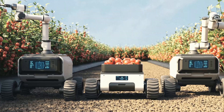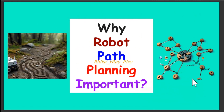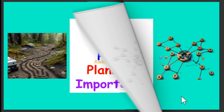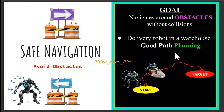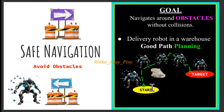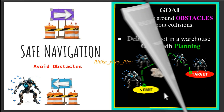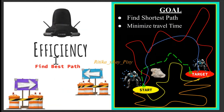Why is robot path planning important? First, we have safe navigation. Proper path planning ensures that the robot avoids obstacles and moves around them without any collision. Here we have two examples: with poor path planning the robot will crash into objects, and with good path planning the robot moves safely without any danger.